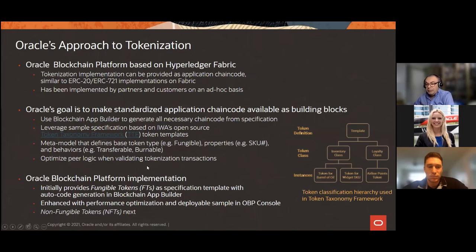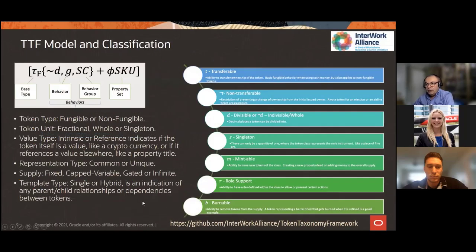We optimized the logic in Hyperledger Fabric peer nodes when validating tokenization transactions to ensure scalability. Our initial implementation, available since summer, focuses on fungible tokens with a specification template you can customize, then auto-generate code with performance optimizations. Non-fungible tokens are next on our radar for early next year. The Token Taxonomy Framework defines base types — fungible or non-fungible — token units like fractional, whole, or singleton, supply specifications whether fixed or capped, and various template types.